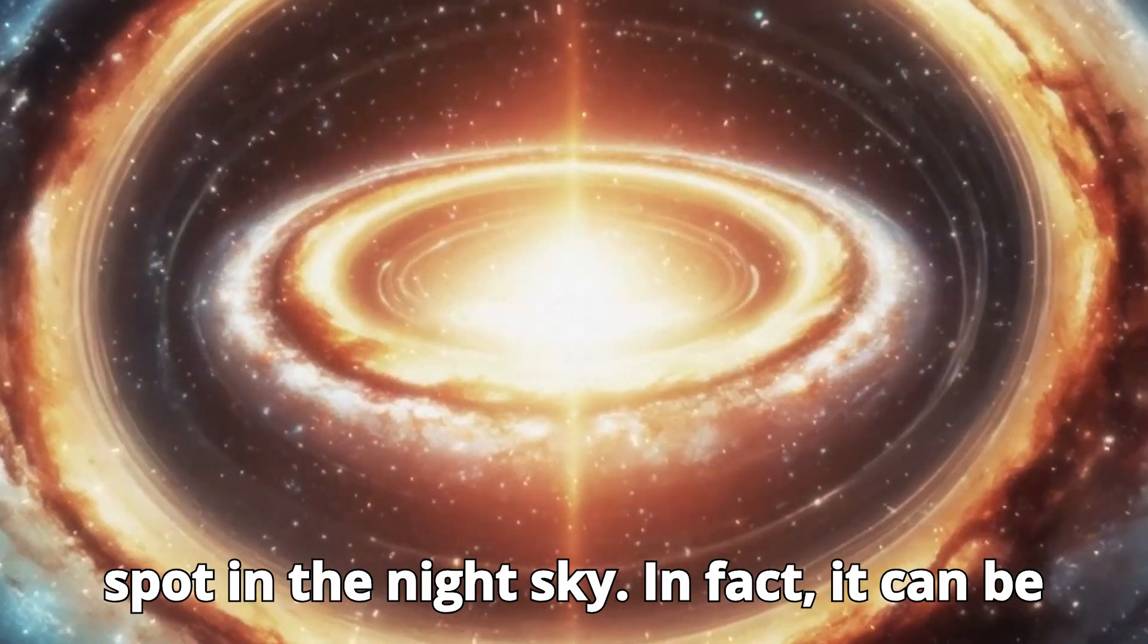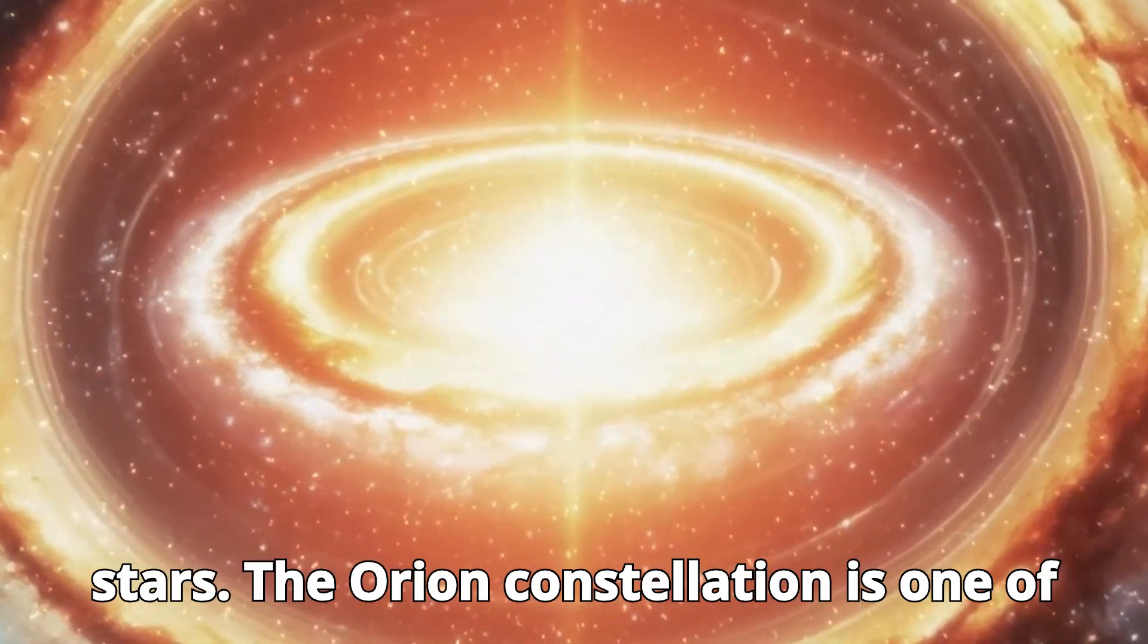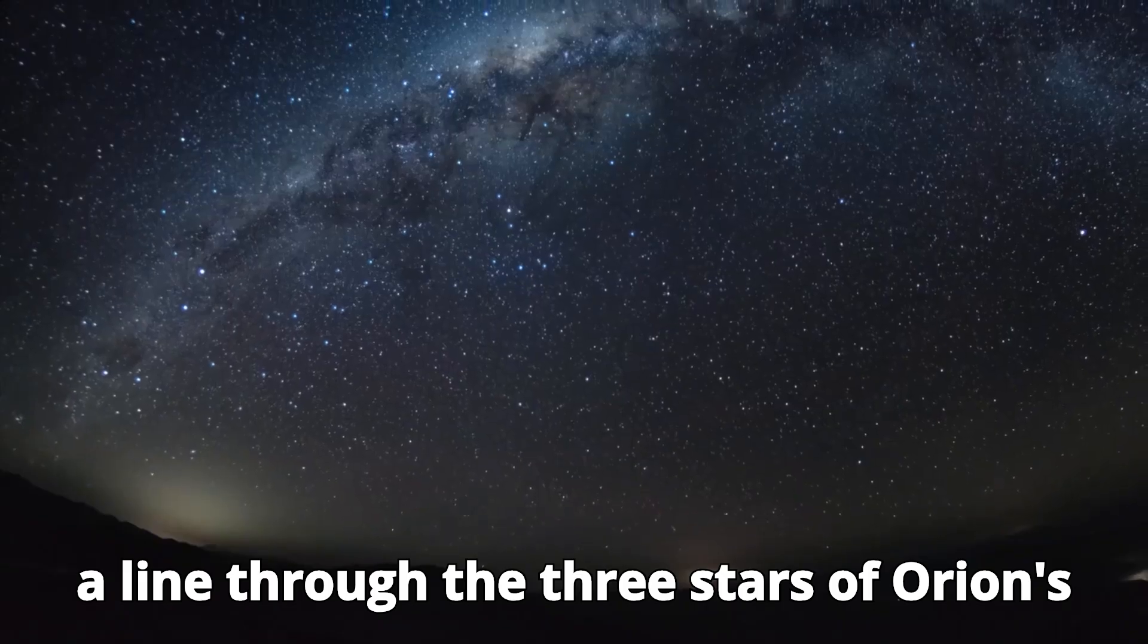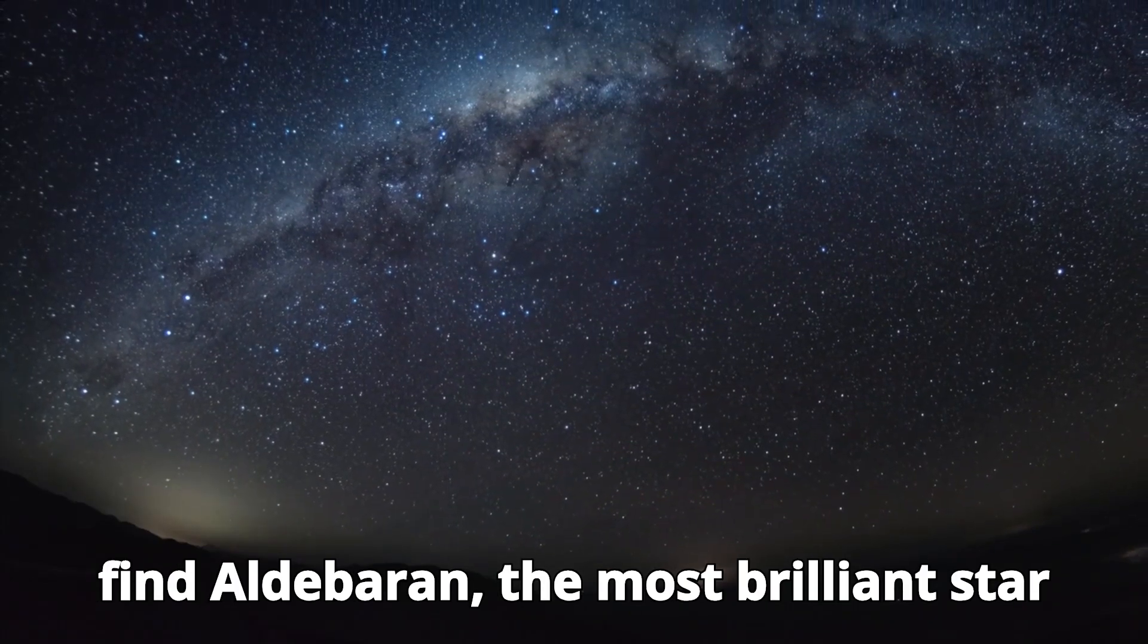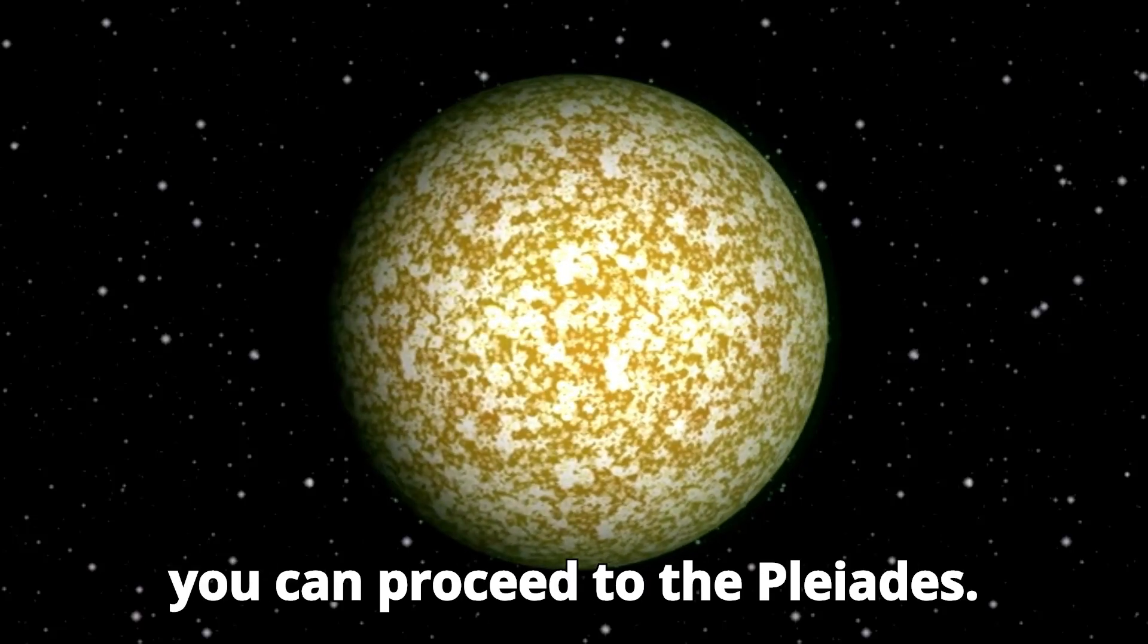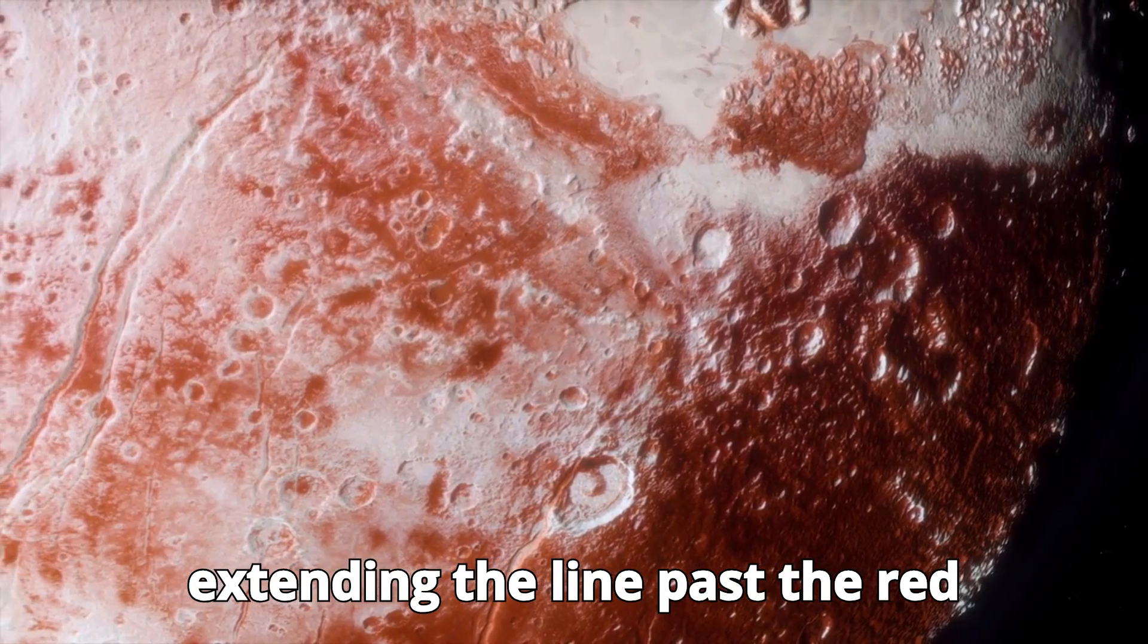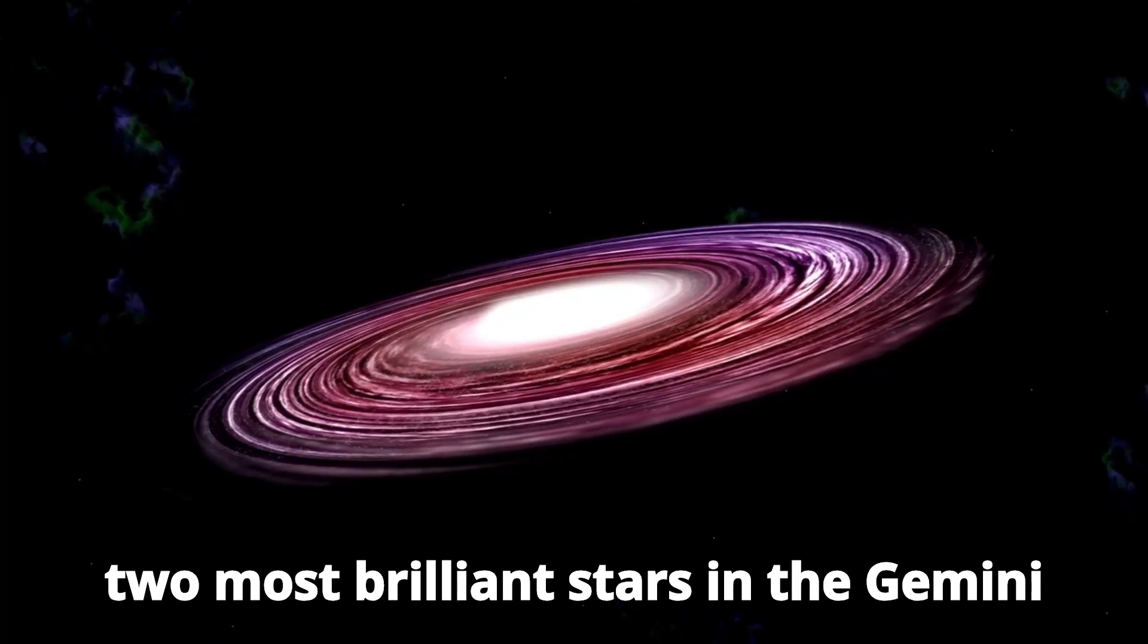Betelgeuse is easy to spot in the night sky. In fact, it can be used as a reference point to find other stars. The Orion constellation is one of the easiest to detect, and many people use it to navigate the night sky. By drawing a line through the three stars of Orion's belt and extending it upwards, you can find Aldebaran, the most brilliant star in the Taurus constellation. From there, you can proceed to the Pleiades. Similarly, you can follow Betelgeuse as a guide to track down other stars by connecting Riel and Betelgeuse, then extending the line past the red supergiant to reach Castor and Pollux, the two most brilliant stars in the Gemini constellation.